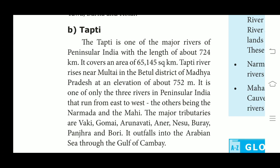The major tributaries of Tapi include Vaigi, Gomai, Arunavati, Anar, Nesu, Purna, Panjhara and Bori. It outfalls into the Arabian Sea through the Gulf of Khambhat. The Tapi is a river in central India, between the Godavari and Narmada rivers, which flows westward before draining into the Arabian Sea. It also flows in a rift valley parallel to Narmada but is much shorter in length. Its basin covers parts of Madhya Pradesh and Gujarat.